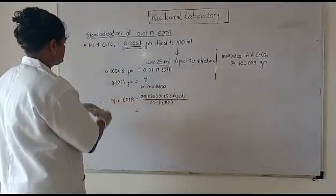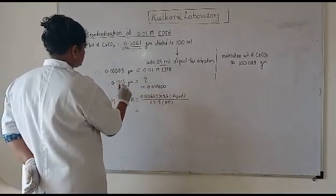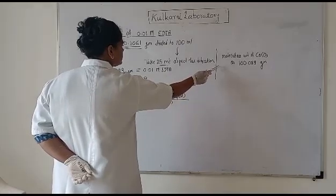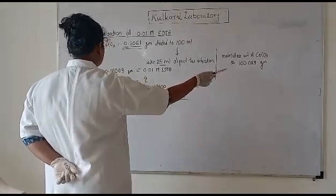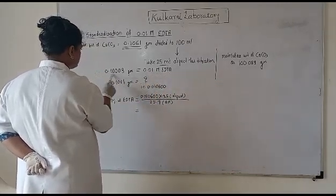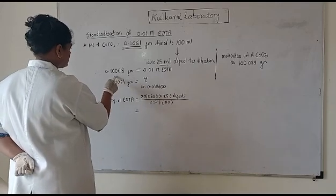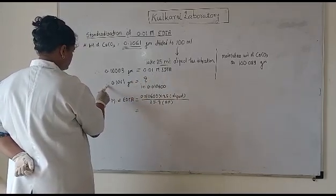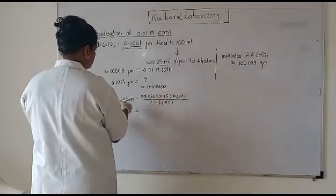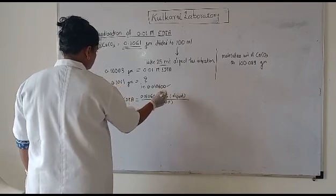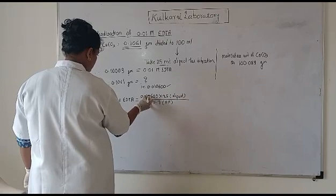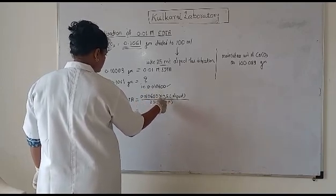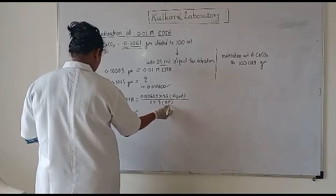Here you can see we took a theoretical weight of 0.1009 gram, which corresponds to 0.01 molar EDTA. The molecular weight of calcium carbonate is 100.089 gram per mole, and accordingly 0.1009 gram corresponds to 0.01 molar EDTA. The weight we took, 0.1061 gram, corresponds to 0.010600. The calculation formula is: 0.010600 multiplied by the aliquot factor (25 ml) divided by the burette reading of 25.7 ml.